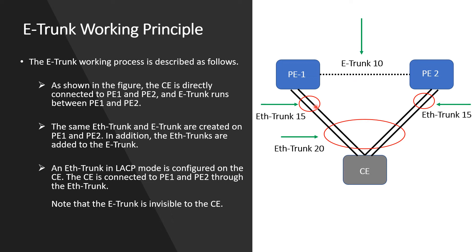The status of a member Ethernet trunk — for example, Ethernet trunk 15 as the member Ethernet trunk for E-trunk 10 — is determined by its E-trunk status, including the remote Ethernet trunk status. If the E-trunk status is master for PE1, that Ethernet trunk member should also be master for PE1. It's a combination of both, but generally if an E-trunk is master for one PE, the member Ethernet trunk complies accordingly. It's a bit complicated but becomes much easier once you're familiar with the configuration.